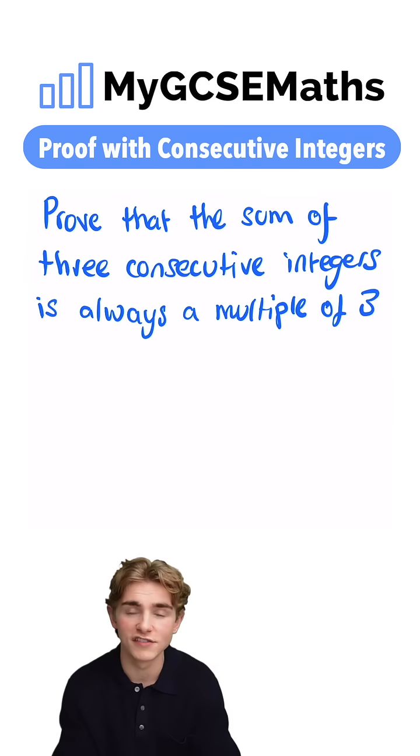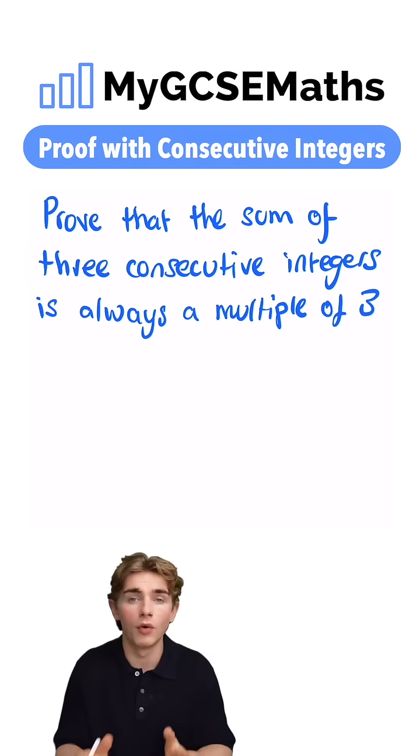Remember, consecutive integers are going to be integers which come one after another. For example, three, four, and five.